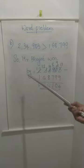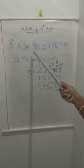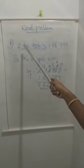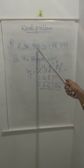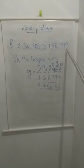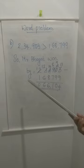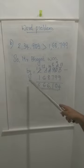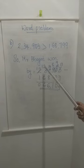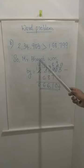Next we have to find who won the election and by how much. By comparing the two numbers we can see that 2,34,903 is greater than 1,68,799. So Mr. Bhagat won the election, and we have to find by how much — that we find by subtraction. So subtracting the number of votes for Miss India from the number of votes for Mr. Bhagat.